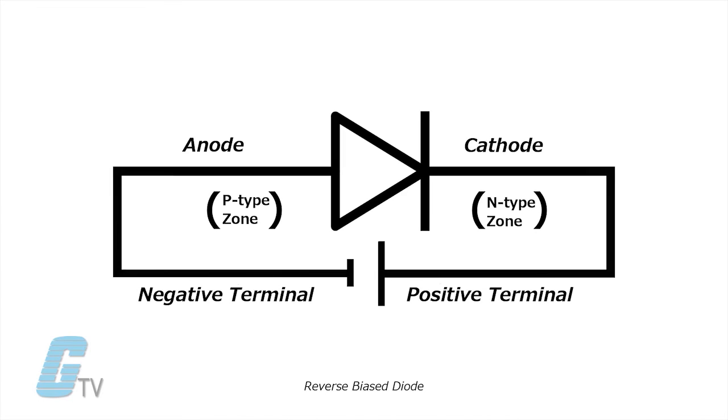When reversing the direction of the input source where the positive terminal is connected to the N-type and the negative terminal is connected to the P-type, the holes in the P-type are pulled away from the junction as well as the electrons in the N-type.